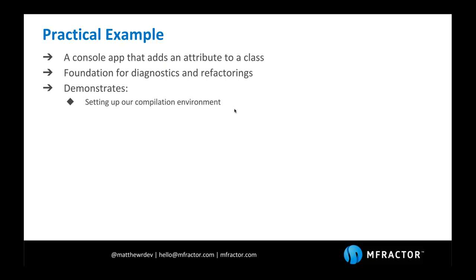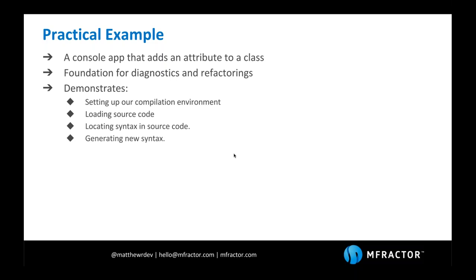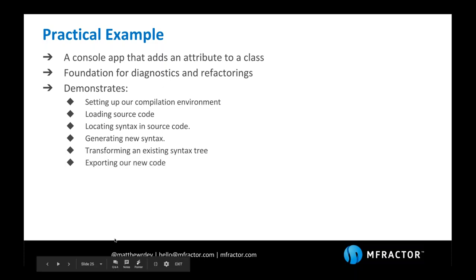This example demonstrates a few key concepts: how to set up a standalone compilation environment; how to load source code — given a .cs file, getting it into a compilation environment to generate a syntax tree and load symbol information; how to explore a syntax tree to locate a specific piece of syntax; how to create new syntax; how to modify existing syntax tree properties; and finally how to export that code. It's a complete micro-app demonstrating from setting up a standalone environment, loading code, transforming that code, and exporting it.